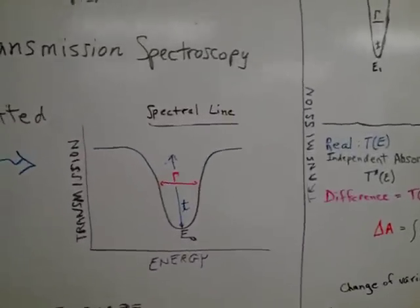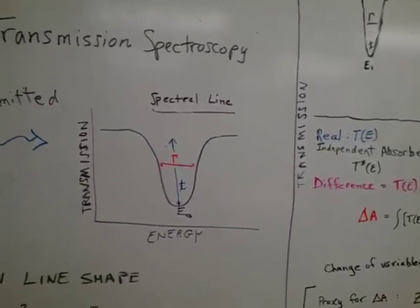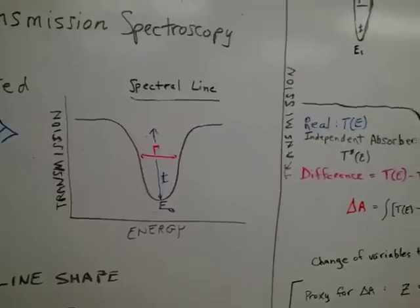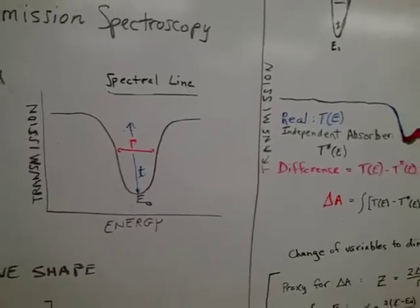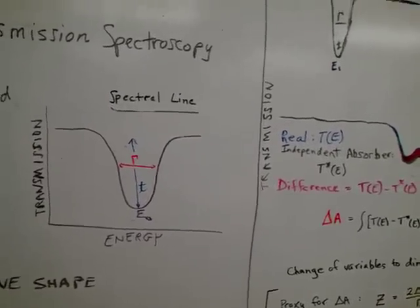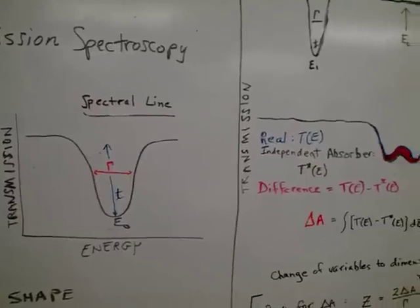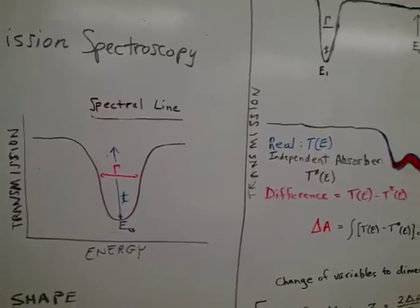It results in giving you a spectrum that has a spectral line with a Lorentzian line shape that's just a decaying exponential. The line has three parameters: a line shape parameter gamma, a concentration parameter T, and an energy parameter E0 that indicates the energy at which the transmission is a minimum.